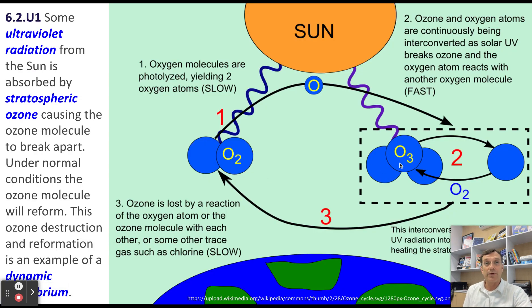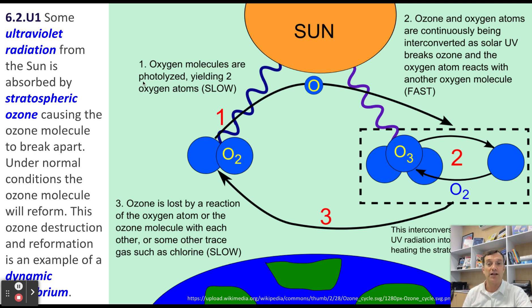Ozone is a molecule made of three oxygen atoms. Most of the ozone in the stratosphere protects us from harmful ultraviolet radiation from the sun. It is formed beginning with diatomic oxygen molecules — two atoms, O2 — which are split by hard ultraviolet rays into two individual oxygen atoms. Those individual oxygen atoms then combine with other diatomic oxygen molecules to form ozone, O3. This process is called photolysis. O3 is less stable than O2, so over time it will break down and decompose, reforming O2 molecules — two ozones break down to form three diatomic oxygens.